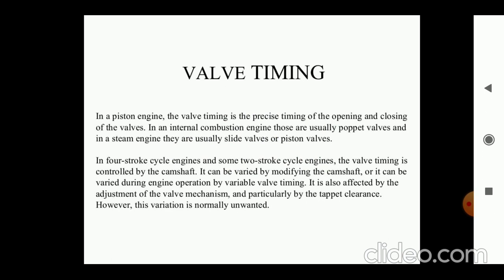Now, in the four-stroke cycle engine and in somewhat two-stroke cycle engines, the valve timing is controlled by the camshaft. As we know, the four-stroke and two-stroke are different cycles. That's why in the four-stroke cycle, generally a camshaft is provided to operate the valve timing or actual valve timing mechanism. It can be varied by modification of camshaft and it can be during engine operations by variable valve timing.